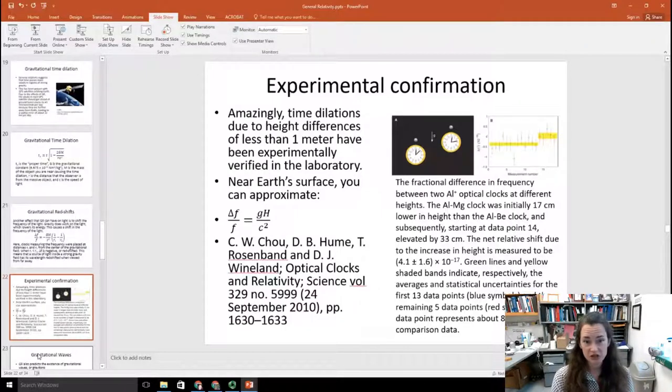And experimental confirmation of that is actually pretty amazing. They've actually measured time dilations due to height differences of less than a meter. And they've been experimentally verified in the laboratory. And of course, this is only thanks to the fact that we have clocks that are so amazingly accurate. In fact, these are optical clocks. Now, this was performed here on Earth. So if you're doing here on Earth, you can use this formula: delta f over f is equal to g times h over c squared, where h is your height, the relative height between the objects.